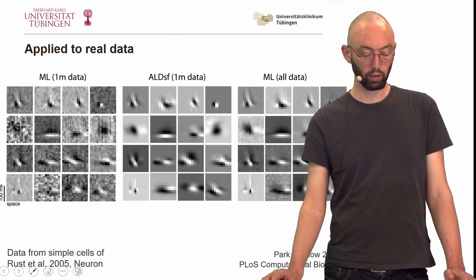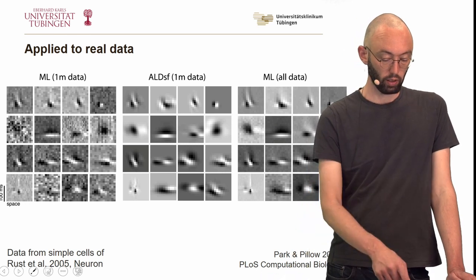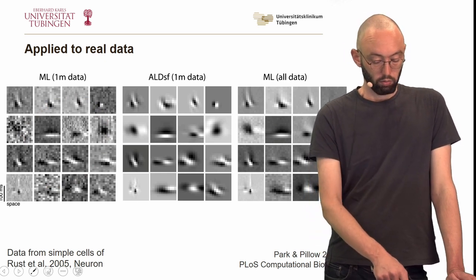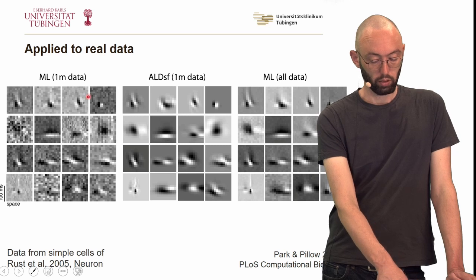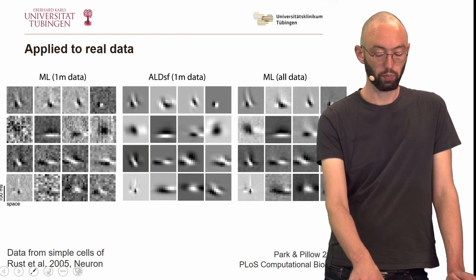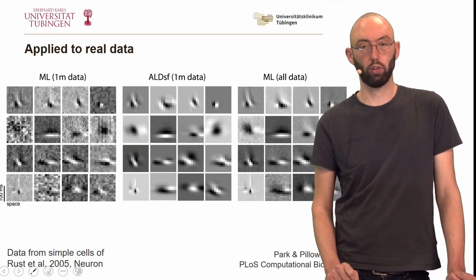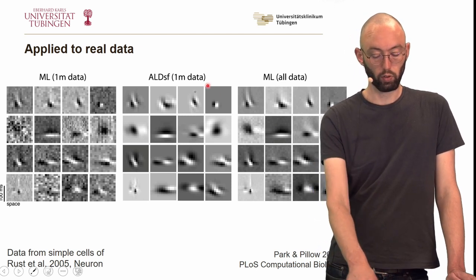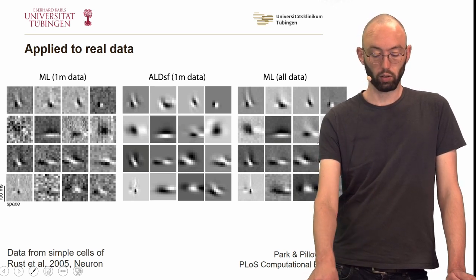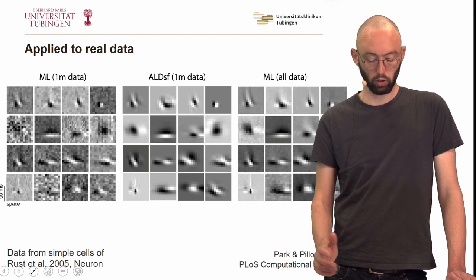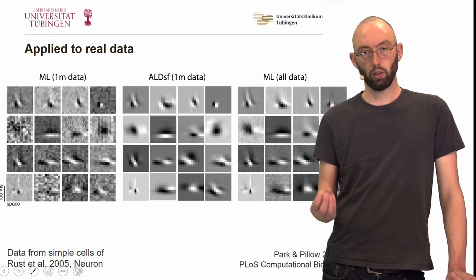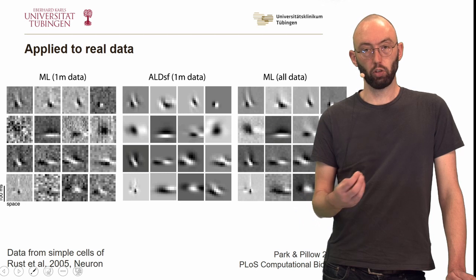Applying this to real data: with only one minute of data, maximum likelihood estimates have clearly discernible shapes but are quite noisy with lots of fluctuations in the background. Using automatic locality determination in space and frequency, all of that noise in the background is gone and the structure comes out really nicely — this almost looks better than using the maximum likelihood estimate with all data, which in this case was about 20 minutes of recording. By using an inductive bias in your model you get estimates that are much more data-efficient.